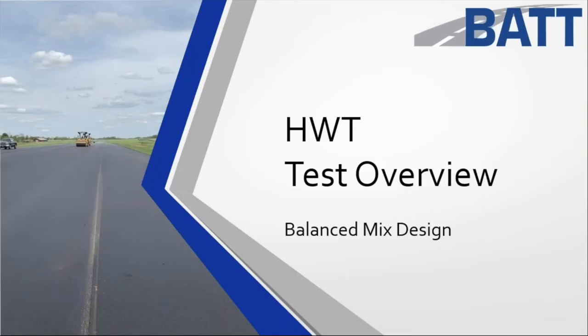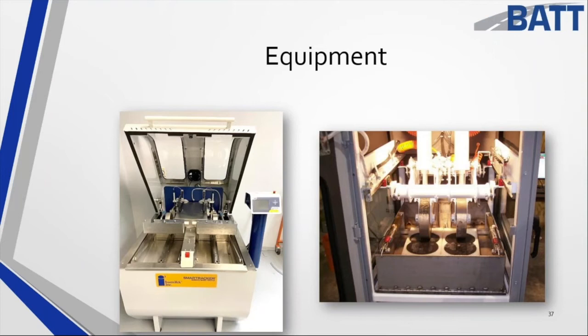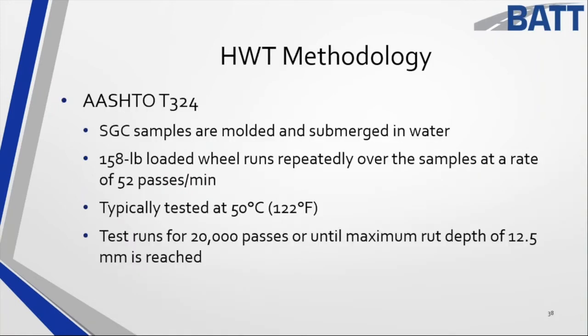A quick overview of the Hamburg test — both devices shown can run the Hamburg test wet or dry, with the same steel wheels. The one on the right is called an APA Junior, but both can run the Hamburg test. Just depends on your preference. Both companies are outstanding. Also not pictured here is Troxler, which makes a very good wheel tracker, along with Cooper and Controls. AASHTO T324 is the standard — typically tested at 50°C, but if you're in the south looking at intersections, be looking at 55°C. In the northern US, use 45°C or cooler. Getting up into Canada and further north, look at test temperatures of 40°C.